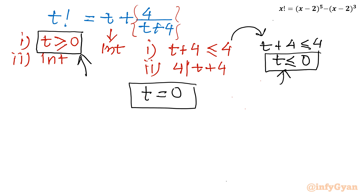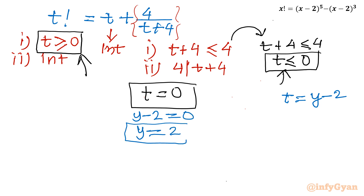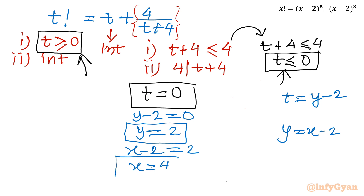Now back-substituting: t equals 0, and since t was y minus 2, we get y minus 2 equals 0, so y equals 2. Since y was x minus 2, we get x minus 2 equals 2, therefore x equals 4. This is our ultimate solution.